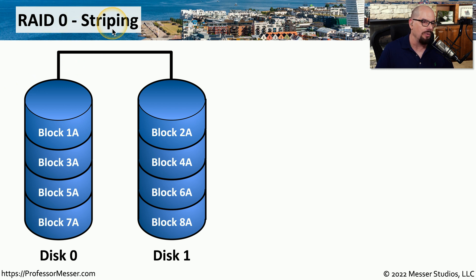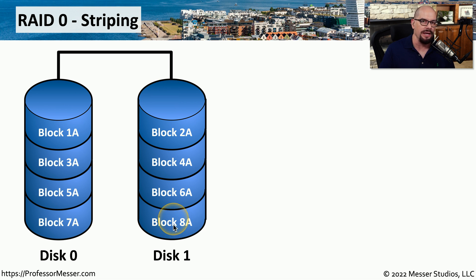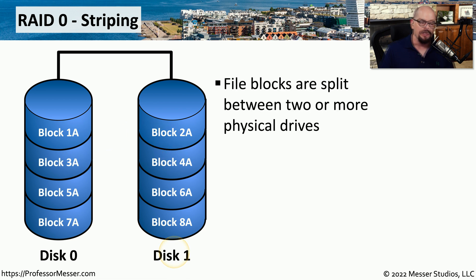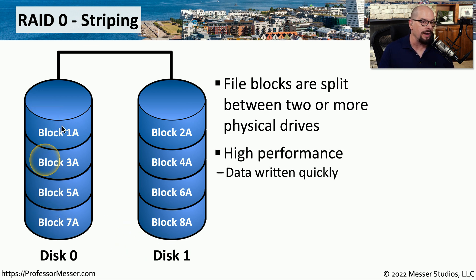We'll start with RAID 0, or striping. We refer to this as striping because we have at least two drives in a RAID 0 array, and instead of writing everything to one drive or everything to the other, we take all of our data and split it evenly between the two drives. For example, a file consisting of eight different blocks with disk 0 and disk 1 — that file will be split evenly. Block 1 is on disk 0, block 2 is on disk 1, block 3 is back to disk 0, block 4 is on disk 1. Distributing data across multiple drives provides a performance increase because you only have to write or read half of the data with two separate drives.